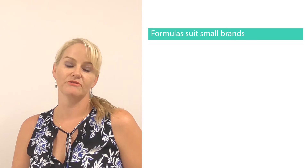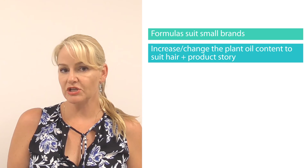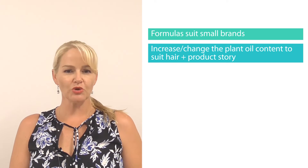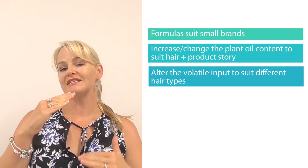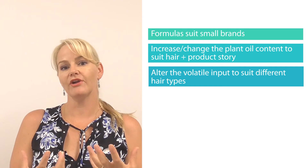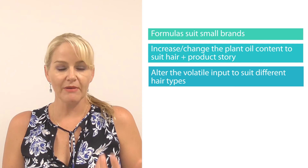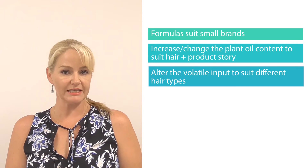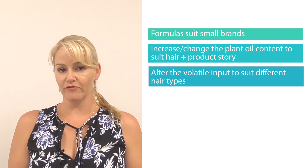Some of the great things about these formulas: for the first formula, even small brands can access the materials. You can increase the plant oil content if that's going to suit the hair of your target market. Make sure you have an absolutely outstanding fragrance, and you can also increase, decrease, or change the ratio of volatile to non-volatile silicons depending on how much product you want remaining in the hair. For a very light formula, use more volatile silicons; for a little more residue, use more non-volatile silicon or more plant oil.